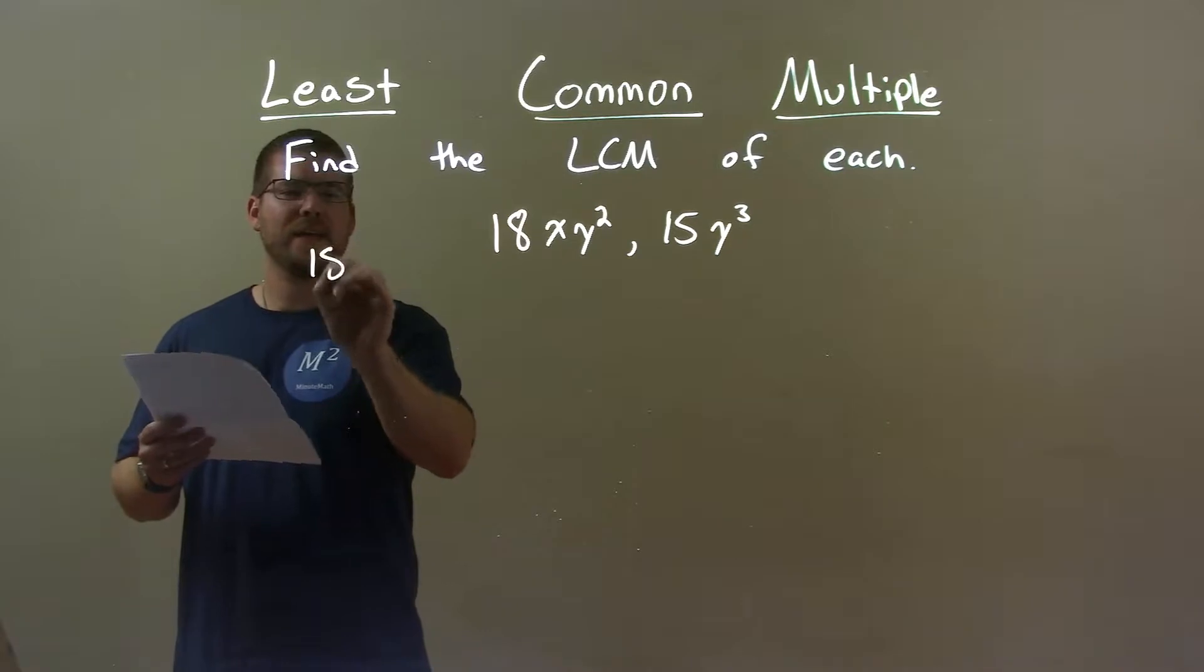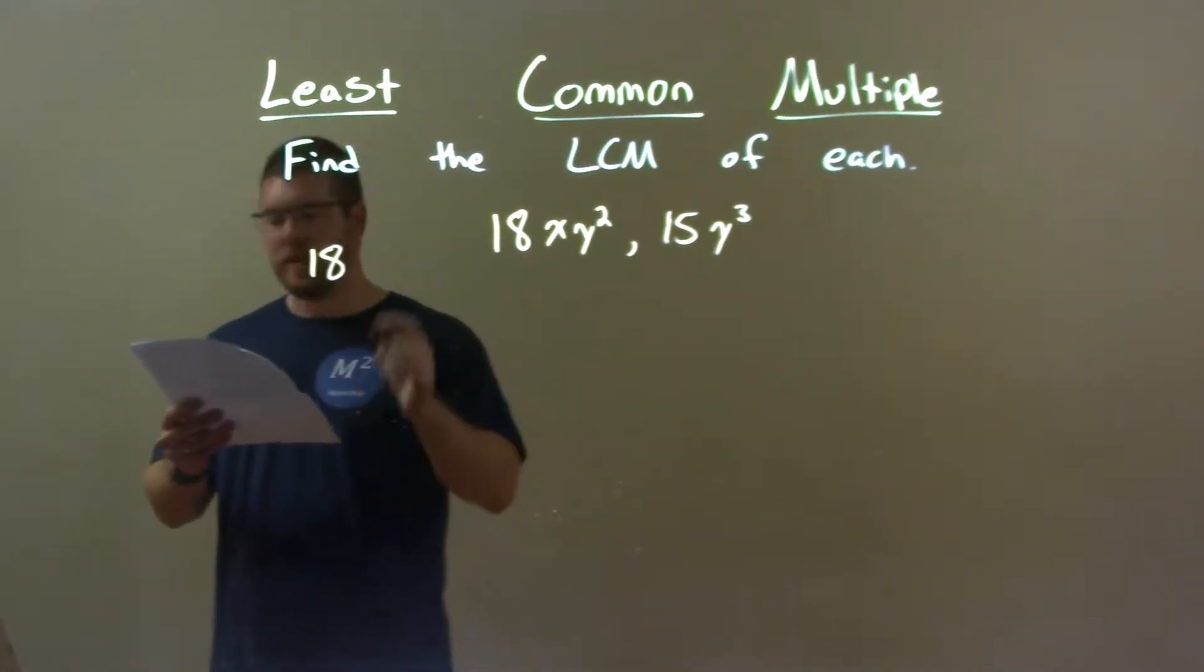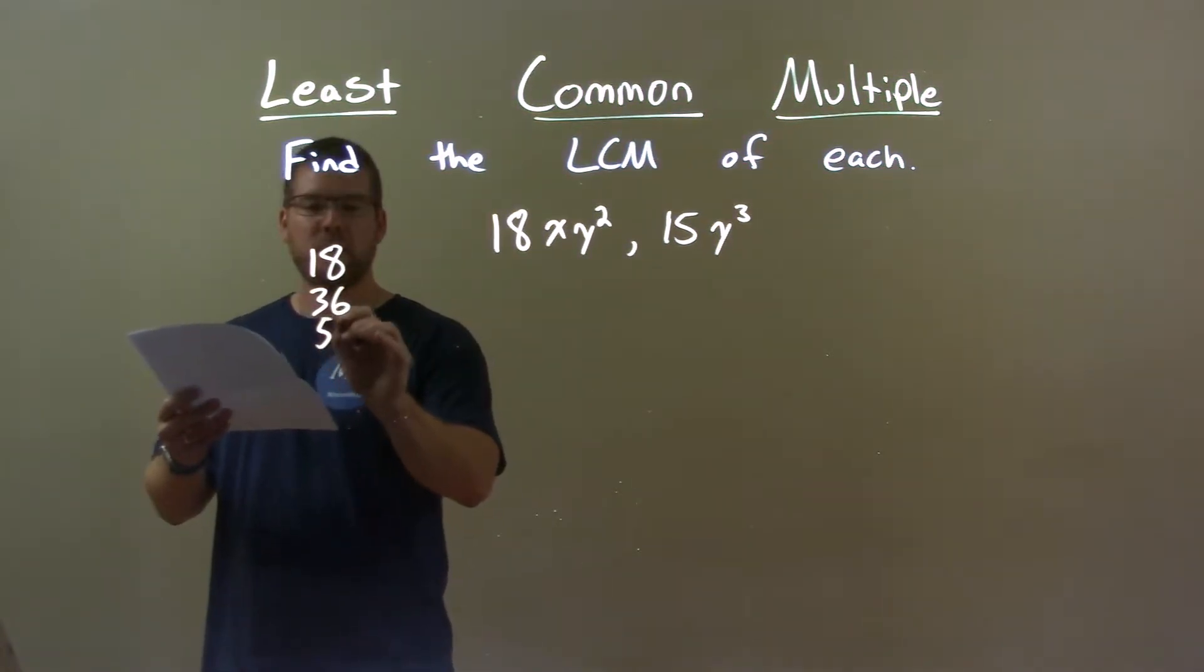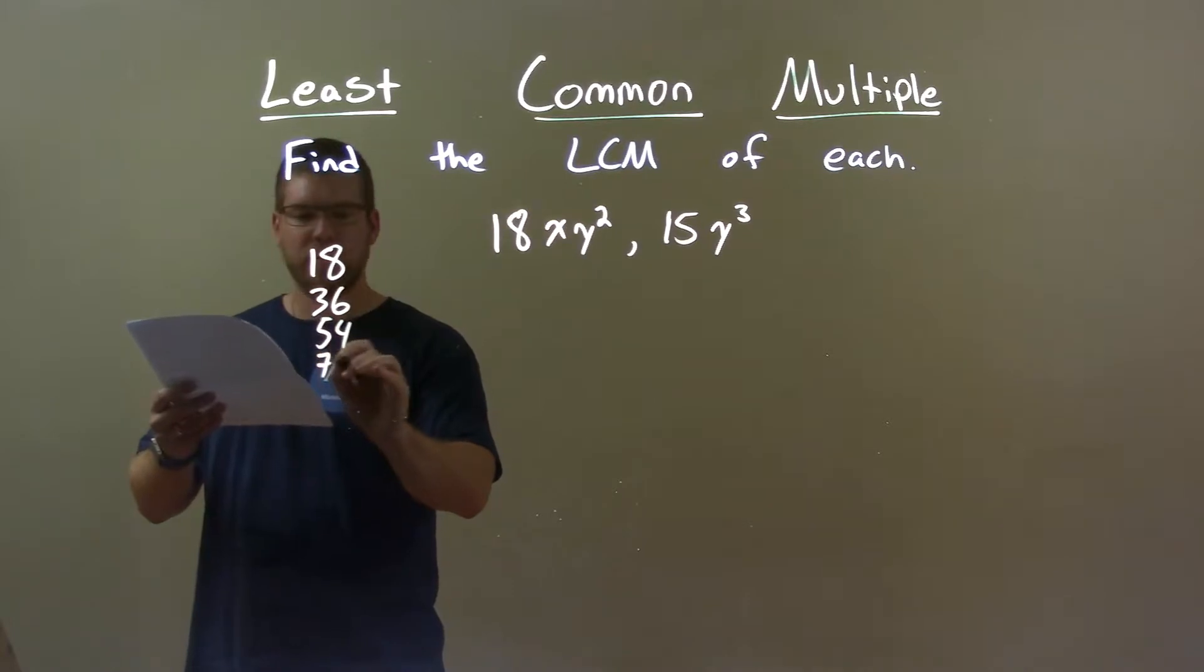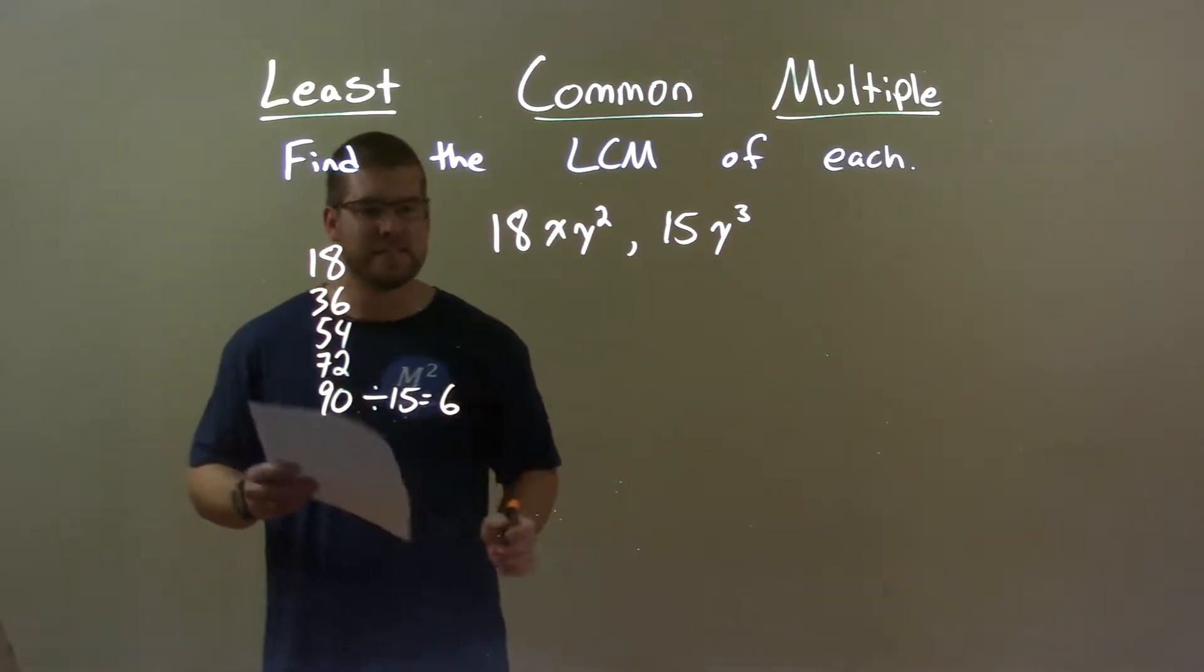So I take 18 and find its multiples and find the smallest one that is divisible by 15. 18 is not divisible by 15, and neither is 36, 54, or 72. We don't get there until 90 because 90 divided by 15 is the first one that goes in evenly, and that is 6.